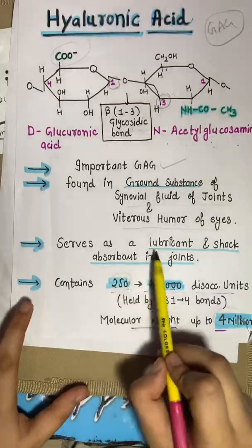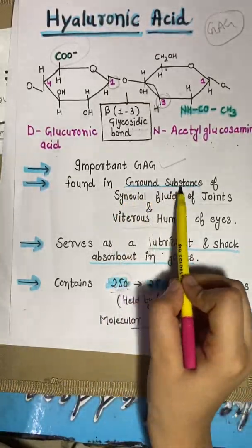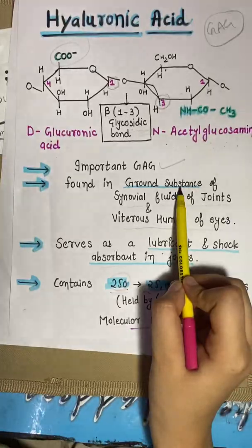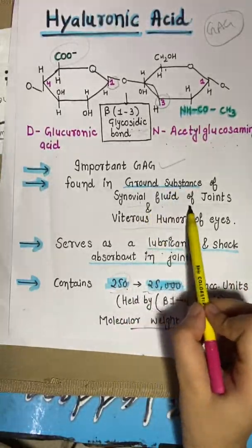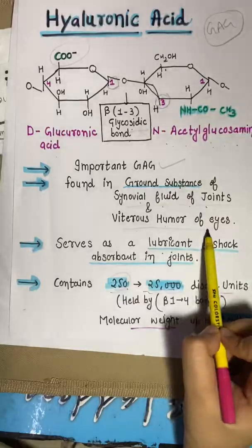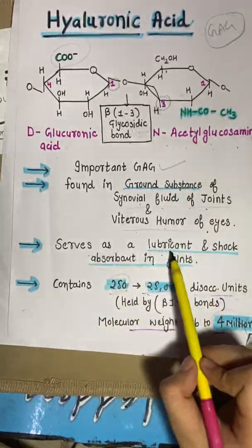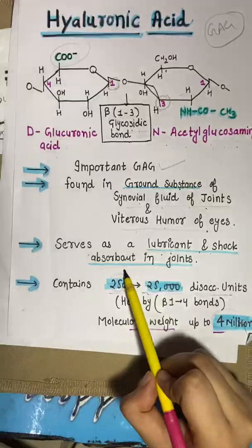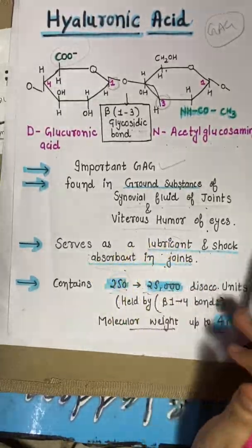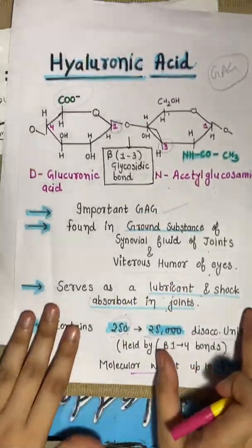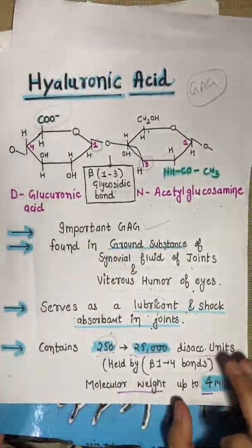Hyaluronic acid serves as a lubricant. It is found in the ground substance, specifically in synovial fluid of joints and vitreous humor of the eyes. Its function is to act as a lubricant and shock absorbent in joints.